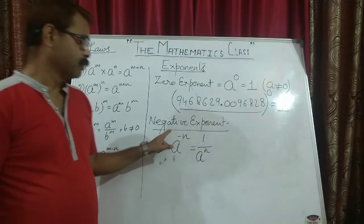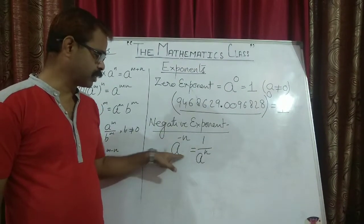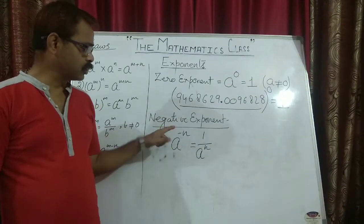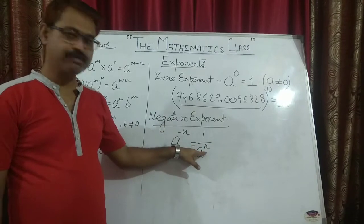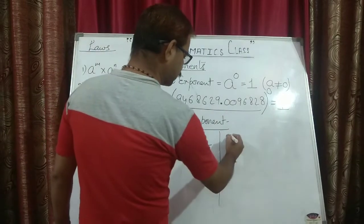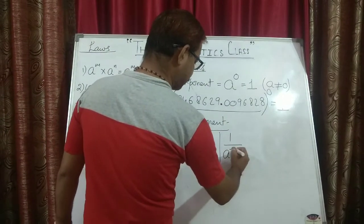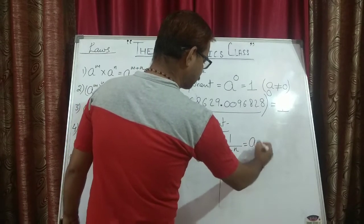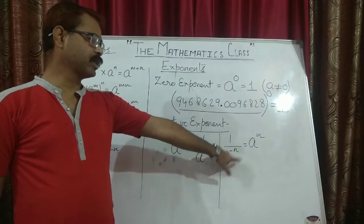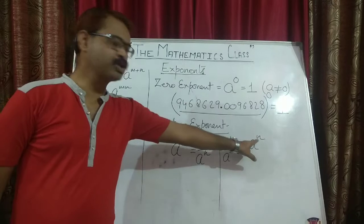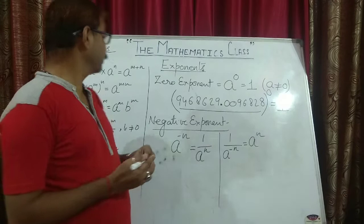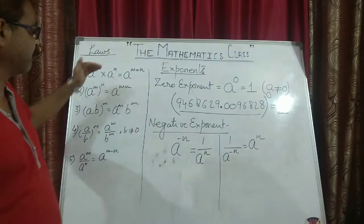If the power is in the numerator — this can be written as a upon 1 — the total exponent is in the numerator, so the power converts to a positive sign and becomes in the denominator: a to the power minus n equals 1 upon a to the power n. Conversely, 1 upon a to the power minus n can be written as a to the power n. That is the negative exponent. So now we will discuss these five laws.